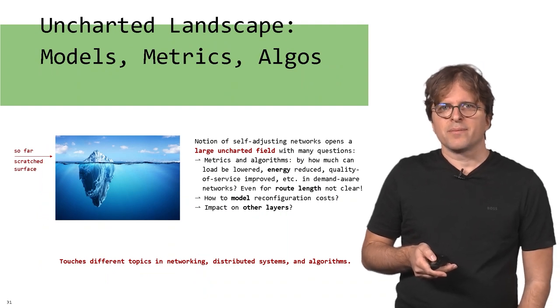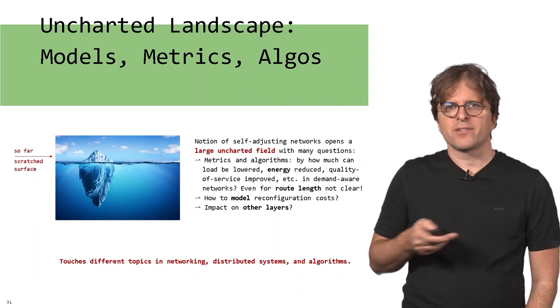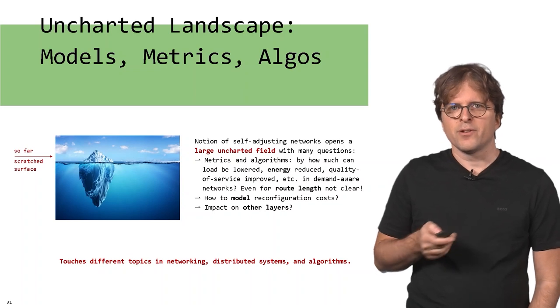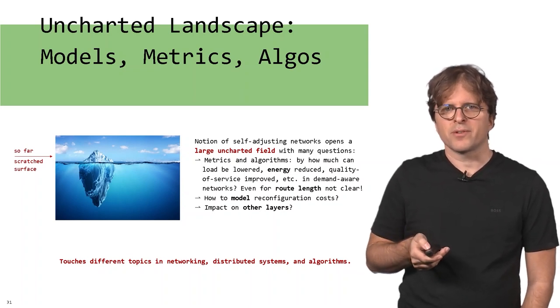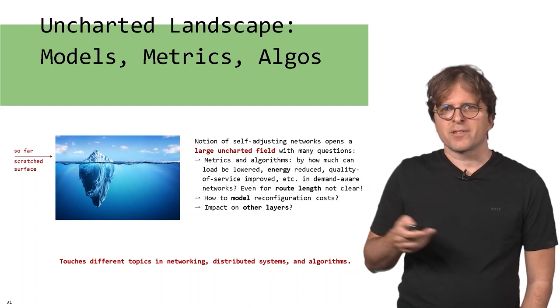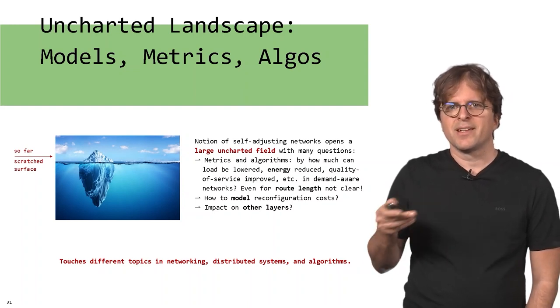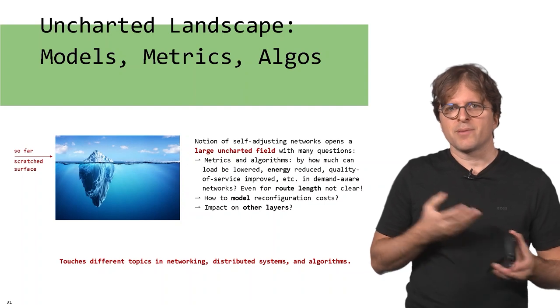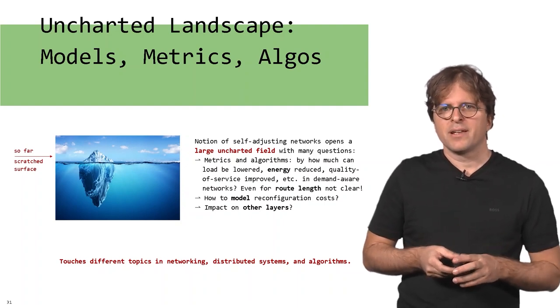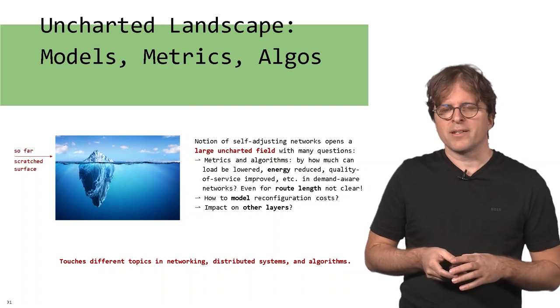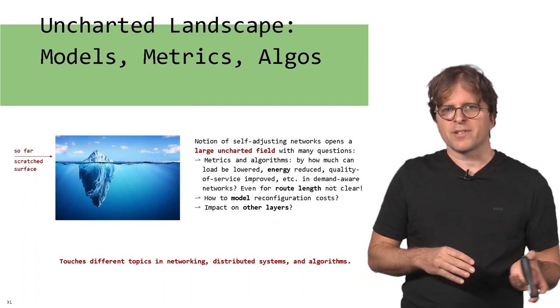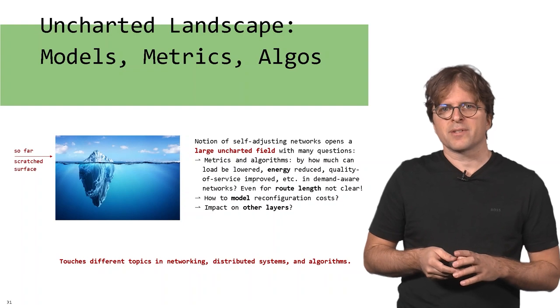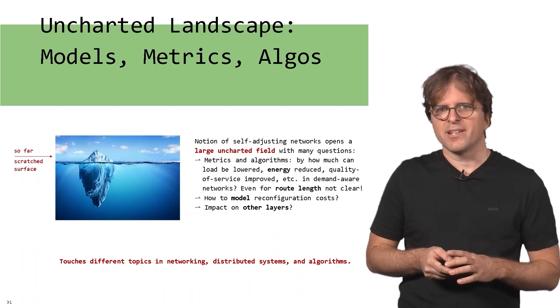Overall, this self-adjusting network vision introduces a quite uncharted landscape. We currently have some good understanding, but it's a very new field. Of course, if you start to change the physical topology, this may have an effect on routing, congestion control, and other layers in the network. The technology brings together a lot of different fields - networking, distributed systems, and algorithms. That's what we want to study in this course.